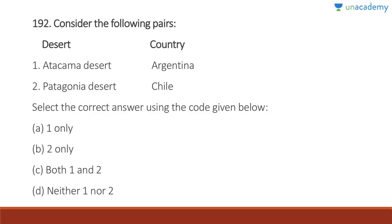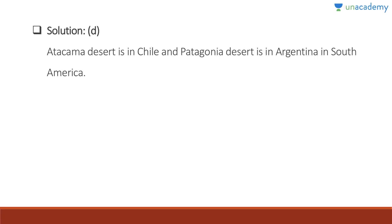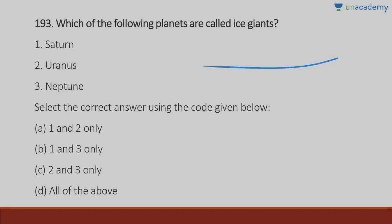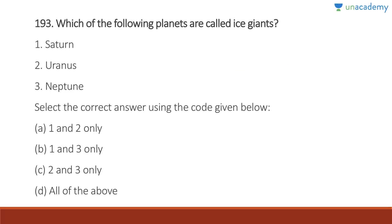Question 192: Atacama Desert is in Argentina — wrong, it is in Chile. Patagonia Desert is in Argentina — correct. Both are reversed in the statement. Answer is D, neither one nor two. The Atacama Desert is in Chile and the Patagonia Desert is in Argentina.